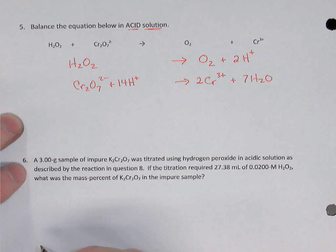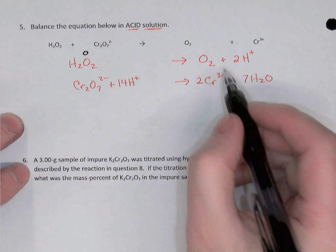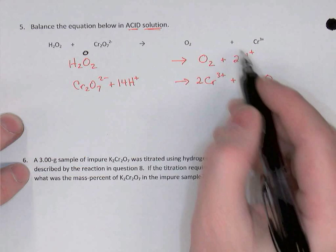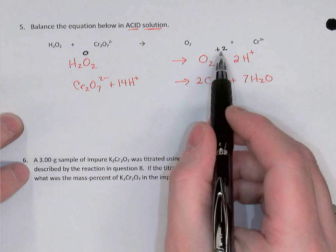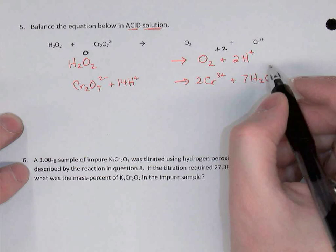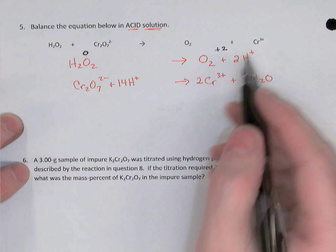Now balance the charges. On the left of the first reaction, hydrogen peroxide is neutral — charge zero. On the right, oxygen is neutral but there are two hydrogen ions — so that side is plus two. To balance the charges, we add electrons to the more positive side. The difference is two, so we add two electrons to the right-hand side.